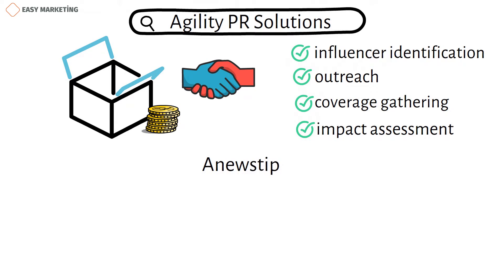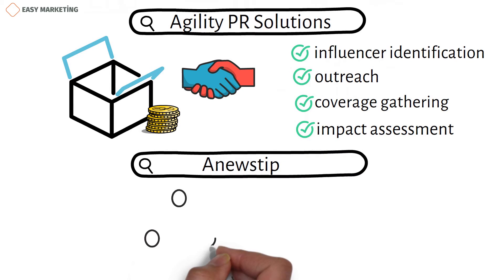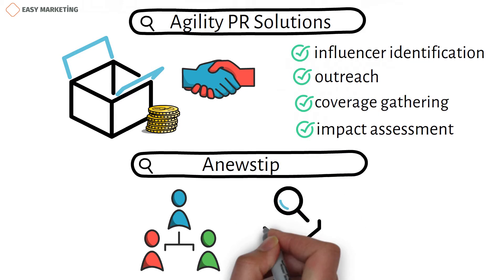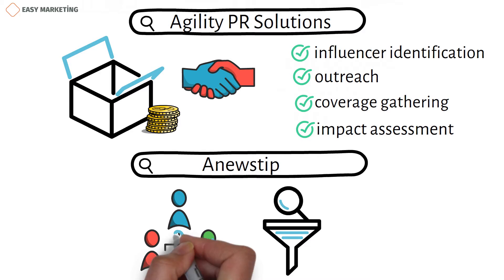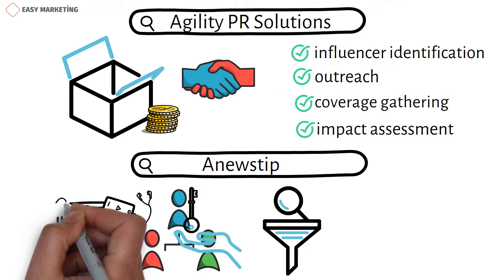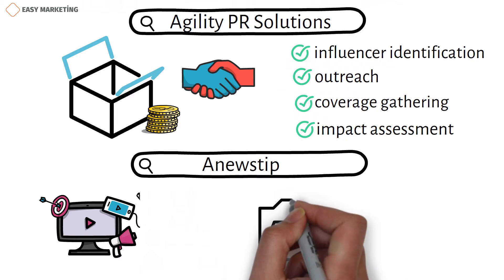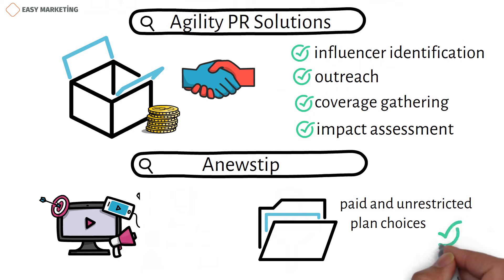Anewstip. Anewstip is a tool for managing relationships and searching the media. You may use it to find journalists and influencers worldwide, search for media mentions by keyword or handle, and build a media database of crucial PR campaign contacts. It provides both paid and unrestricted plan choices.